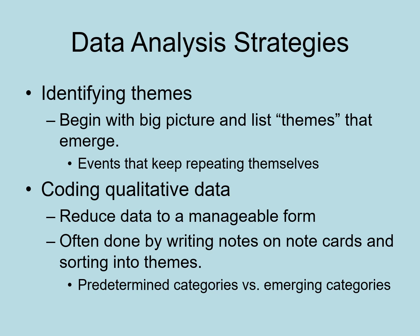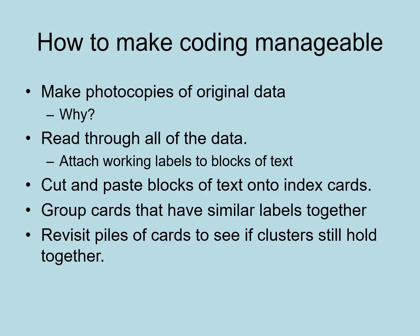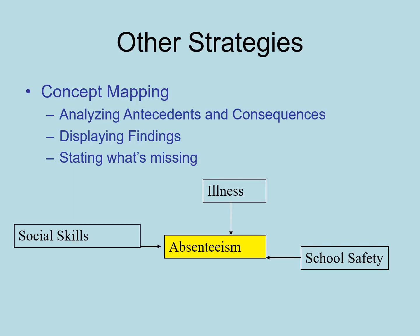Strategies would include identifying themes — you begin with the big picture and list themes that emerge. You code qualitative data so that you could reduce data to manageable forms, often done by writing notes, using note cards and sorting them into themes, and using predetermined versus emerging categories. To make coding manageable, you could make photocopies of original data, read through all the data, cut and paste blocks of text onto index cards, group cards having similar labels, and revisit to see if clusters still hold together. Use of concept maps could also be utilized to analyze antecedents, consequences, and related themes and concepts throughout your data, displaying findings and identifying what's missing.